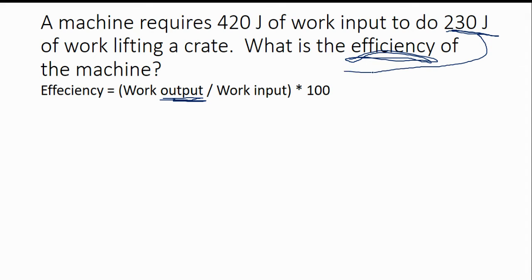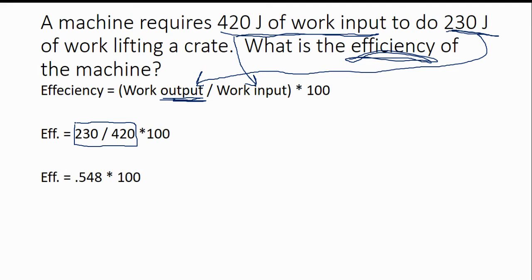So the 230 joules is going to be our work output. Now, our work input, well, it's explicitly said work input. So we can just take that number and plug it in here. So we end up with 230 divided by 420 times 100. So we're going to start by dividing these numbers. When we do that, we get 0.548 times 100. And remember that times 100 just turns a decimal into a percentage.